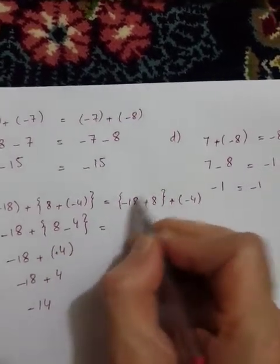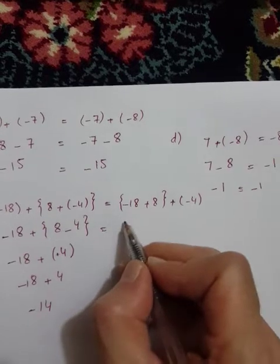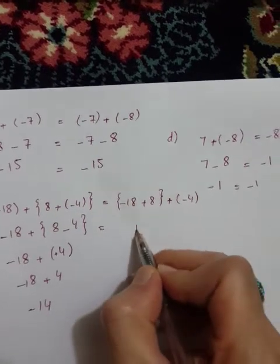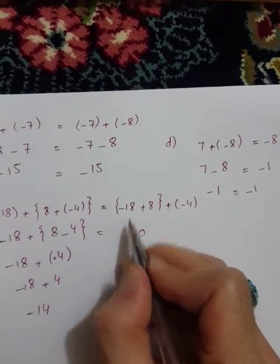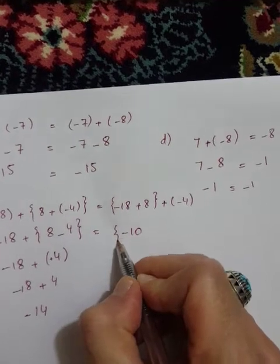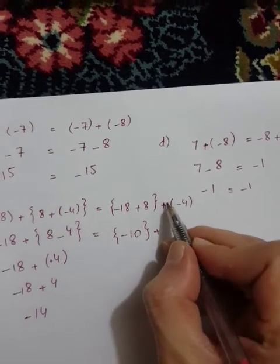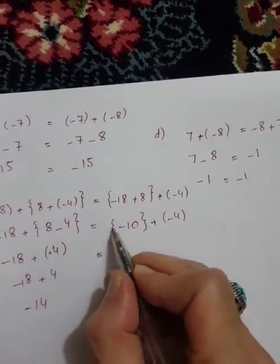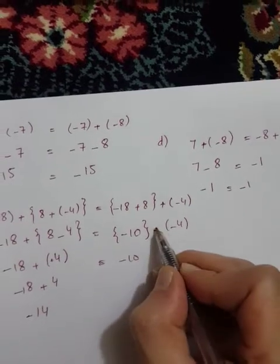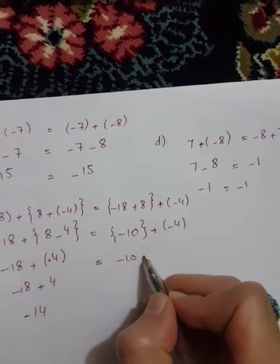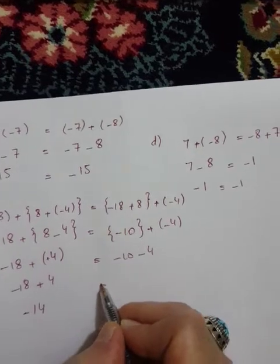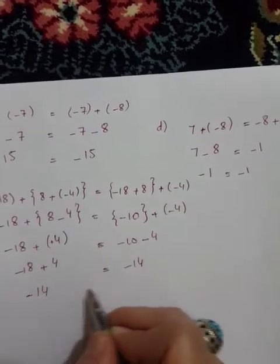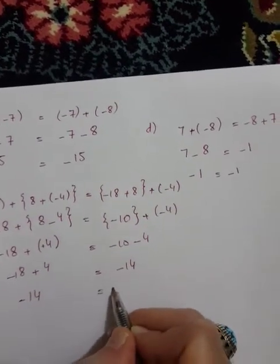First solve the curly bracket: eighteen minus eighteen plus eight. Eighteen minus ten. Now simplify: minus ten plus multiply minus minus four. Minus fourteen equals minus fourteen, verified.